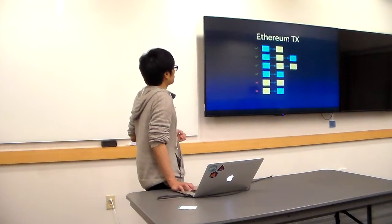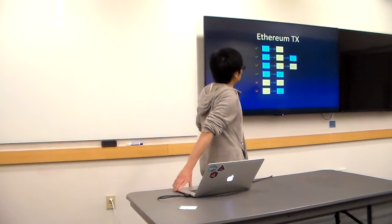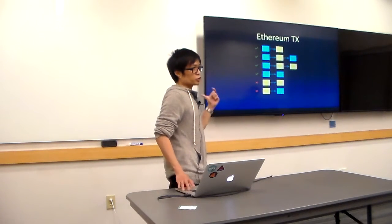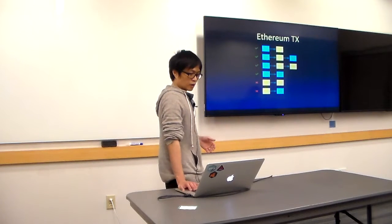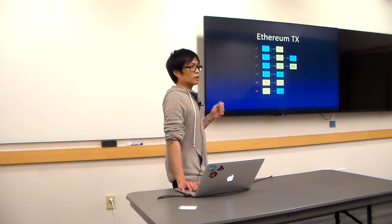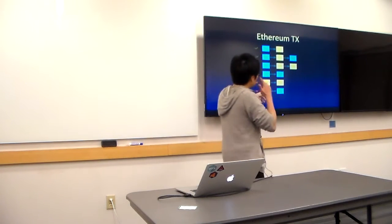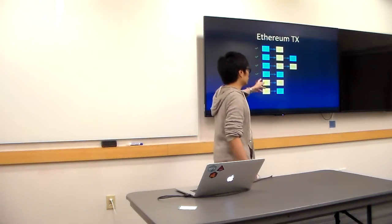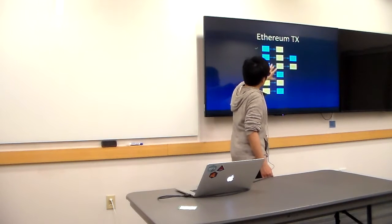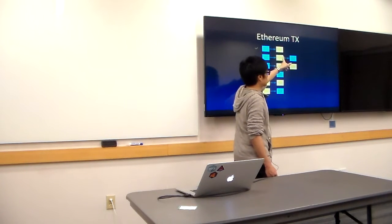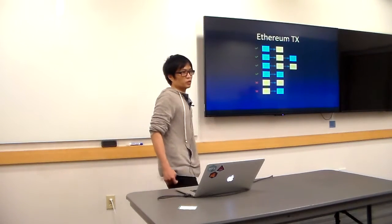In Ethereum, only externally owned accounts can call Ethereum contracts directly. A contract transaction can only originate from a set of keys — it cannot be triggered by a contract on its own. A contract can't just wake up at a certain block number and cause an execution. Most calls come from a person's account — that's TX origin in Ethereum, the origin of the transaction. When it calls another contract, that's the message sender. There's never a situation where a contract will wake up autonomously on its own.